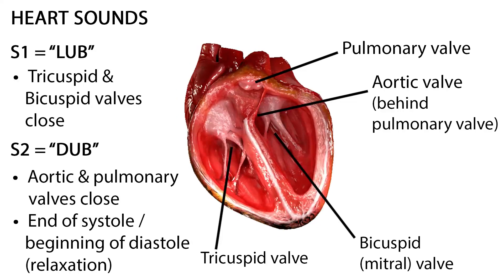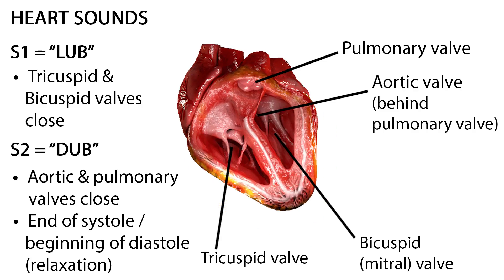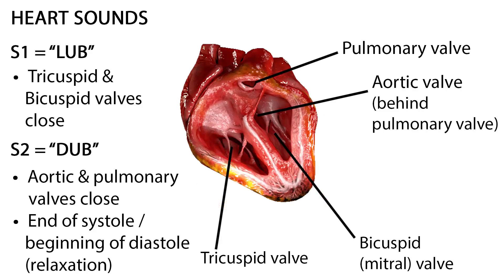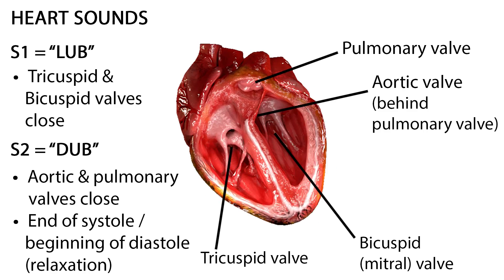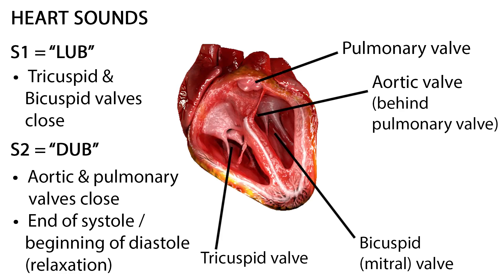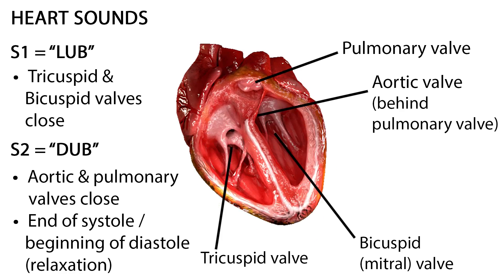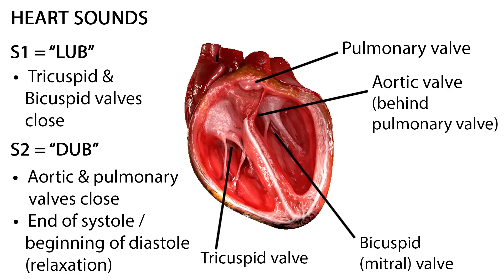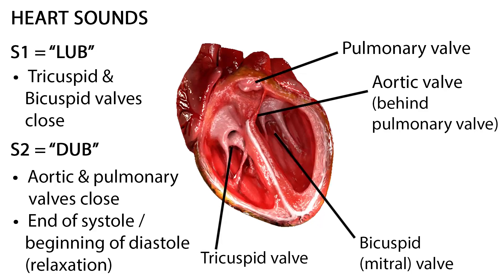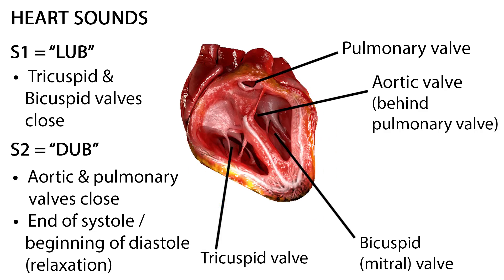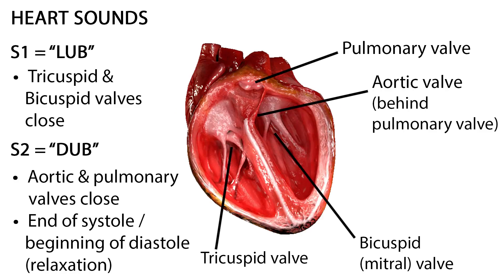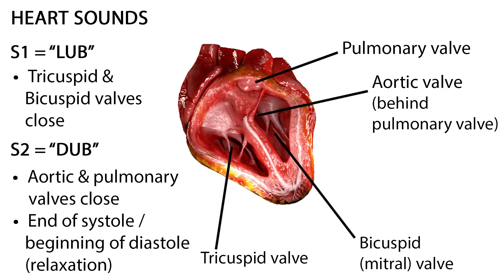As the tricuspid and bicuspid valves snap shut, the pulmonary and aortic valves open. This is the beginning of systole, or contraction of the ventricles. As the ventricles contract, blood is pumped through the pulmonary valve leading to the lungs, and the aortic valve leading to the aorta and rest of the body. These valves then snap shut, making the second heart sound, S2, or dub in lub-dub. This is the end of systole and the beginning of diastole.